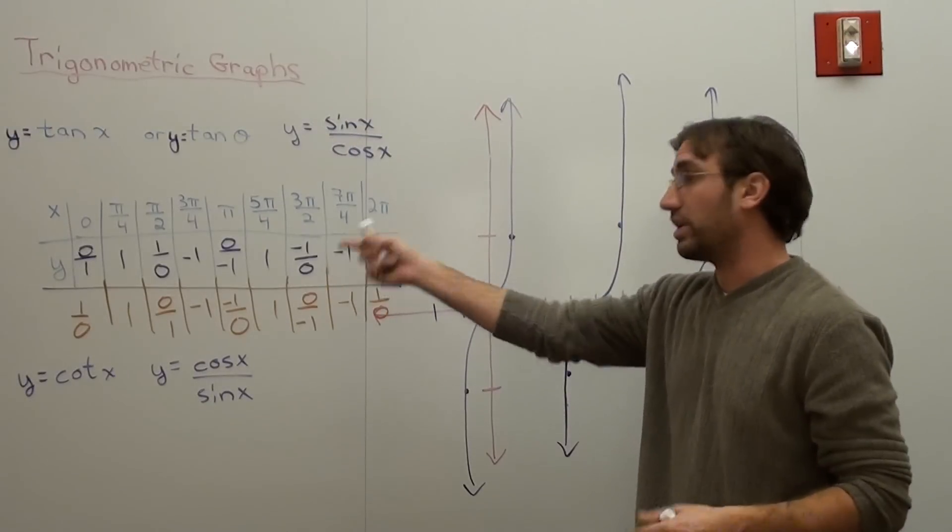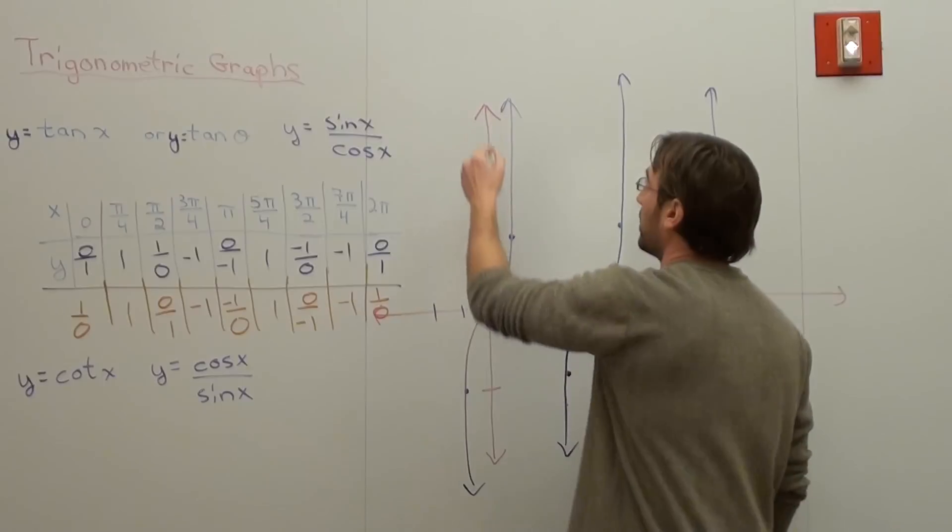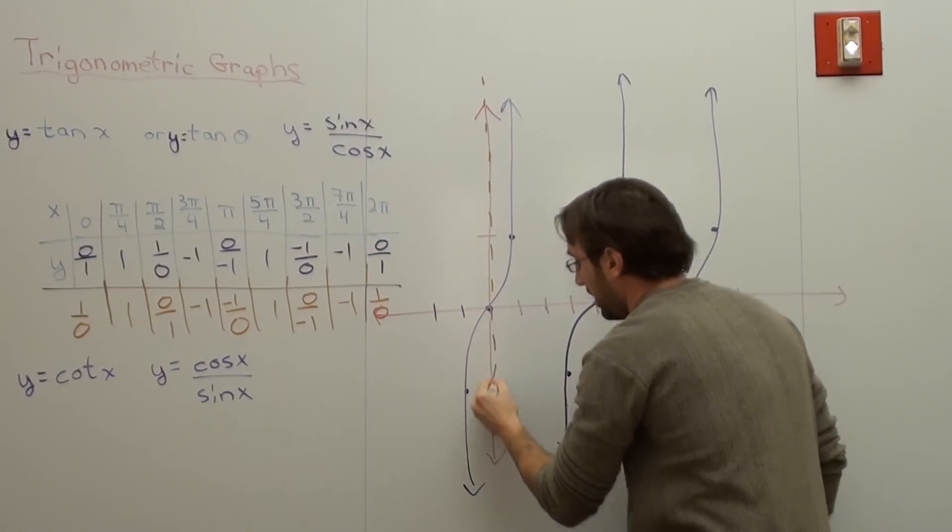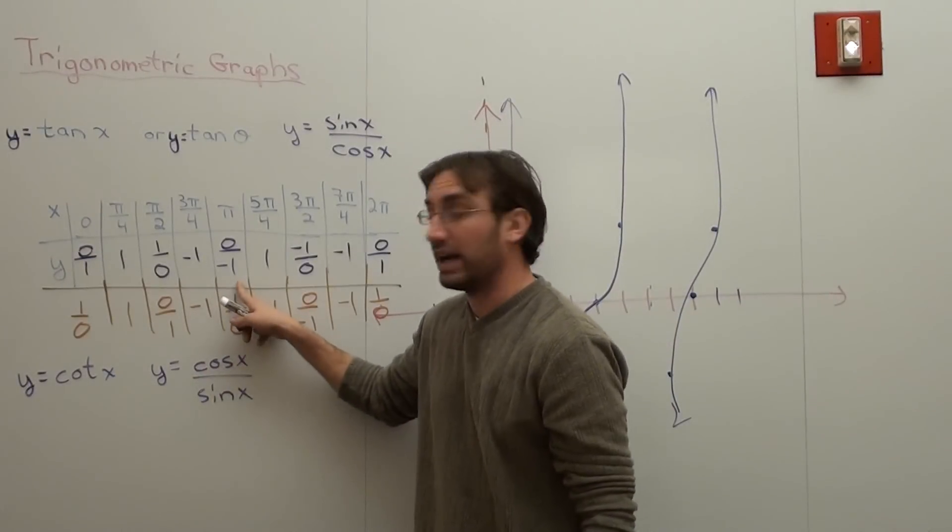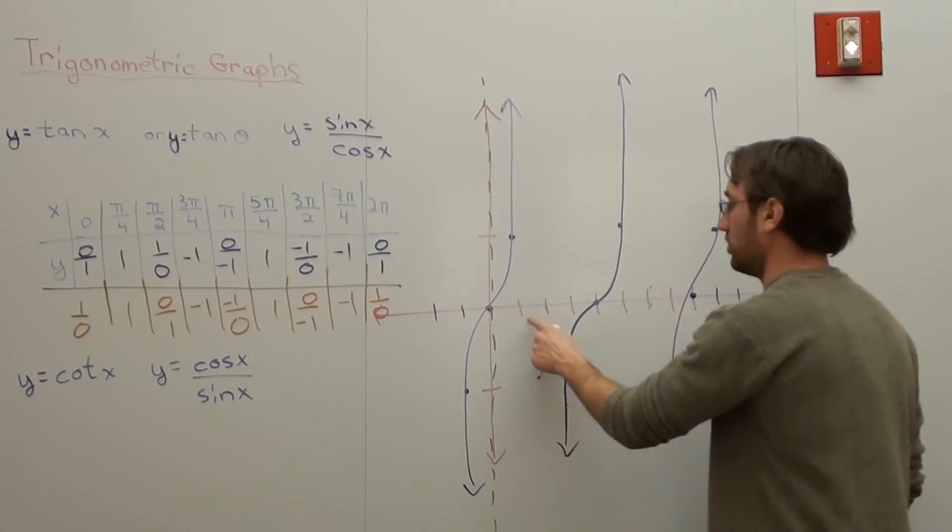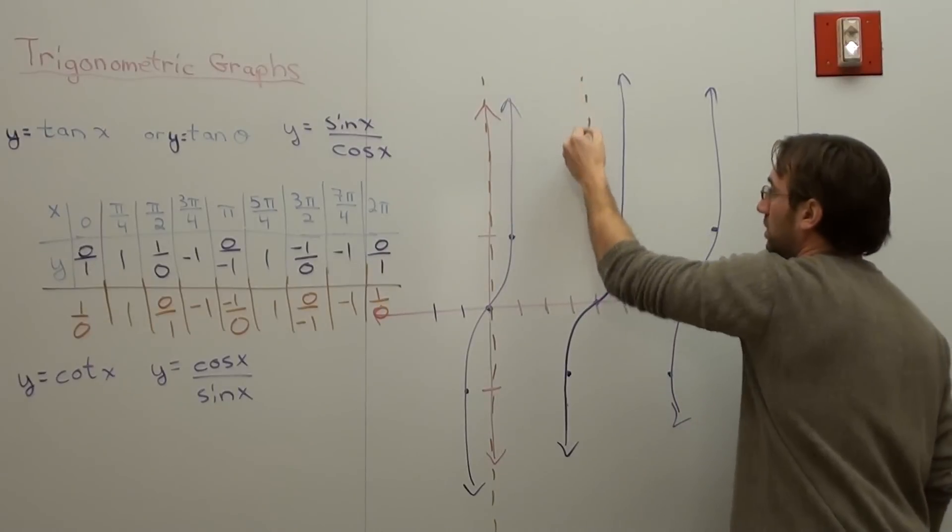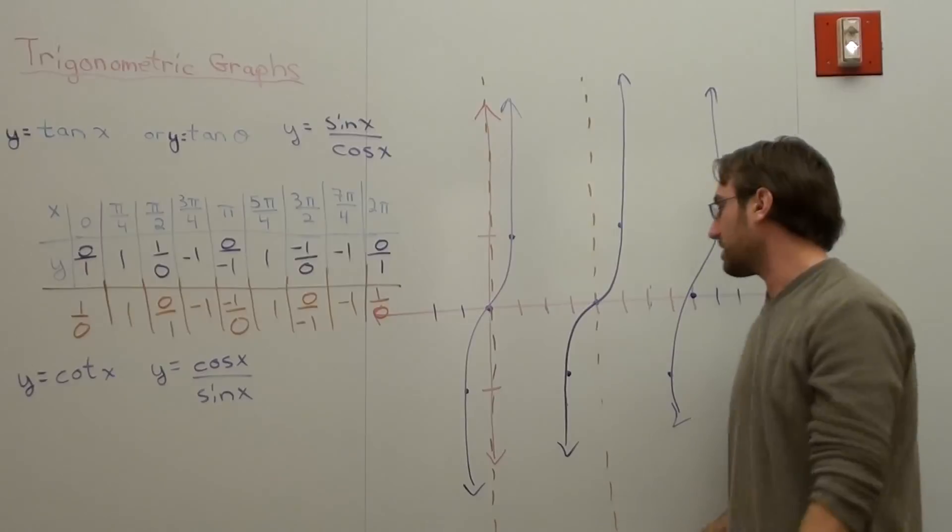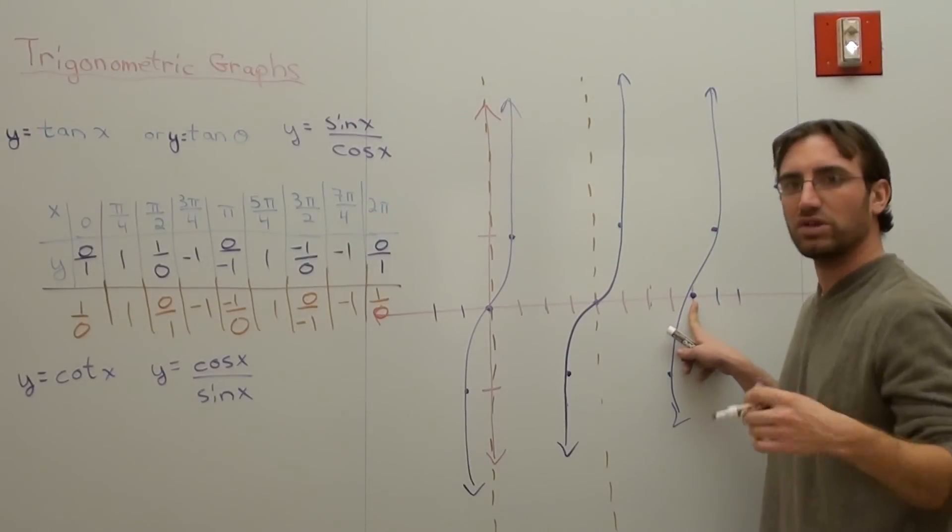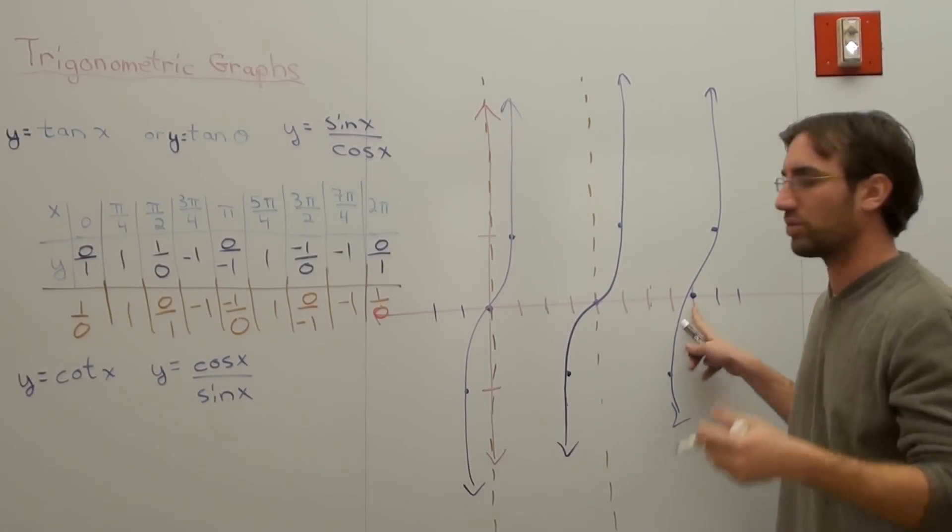So at 0, it's undefined, so I'm going to have to put a vertical asymptote here, and that's the first thing I'm going to do. And at pi, it's undefined. So 1, 2, 3, 4. Without even looking at the table, I should know where the next one is. Basically, wherever the tangent was 0, the cotangent will be undefined because I'm doing the reciprocal value.